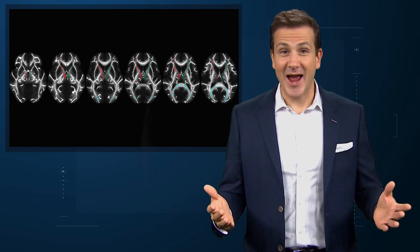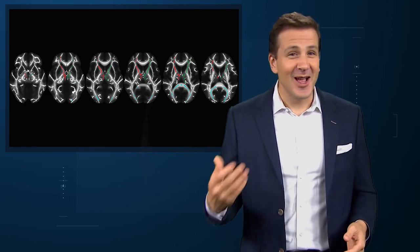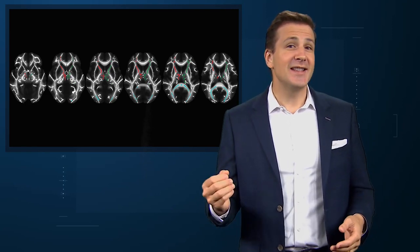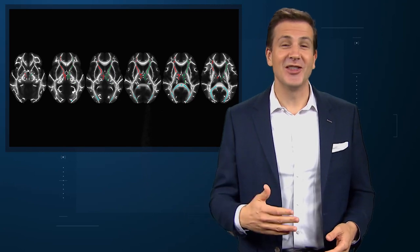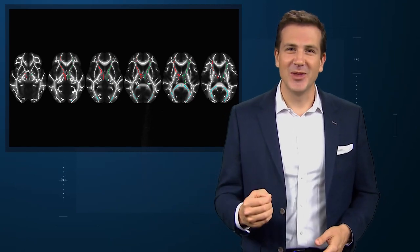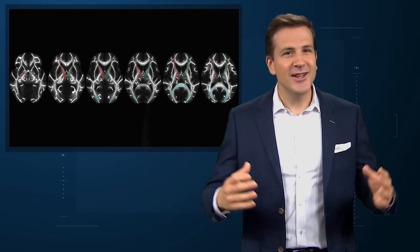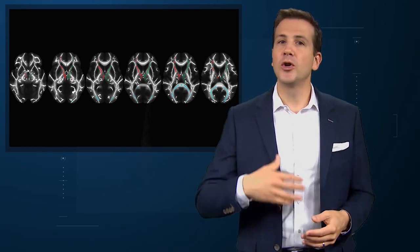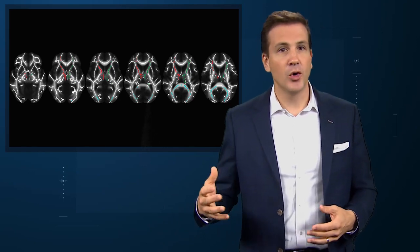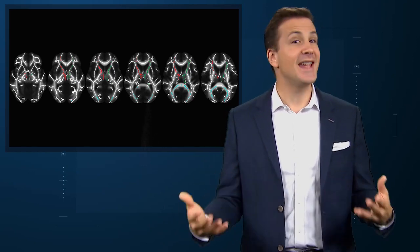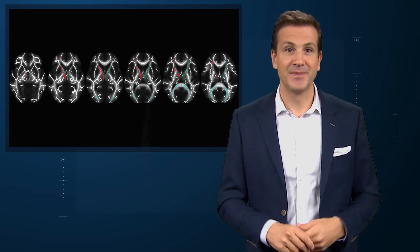What the heck is fractional anisotropy? As a nephrologist who gets accidental calls looking for neurologists all the time, I had no idea. But after I chatted with a few real neurologists, I learned that it integrates a variety of information about white matter. More myelination increases fractional anisotropy, and more structured axonal orientation also increases fractional anisotropy.